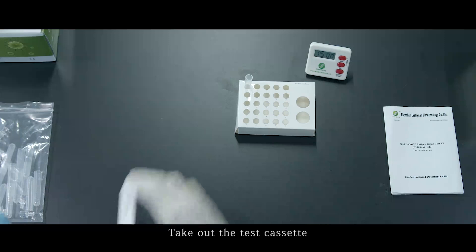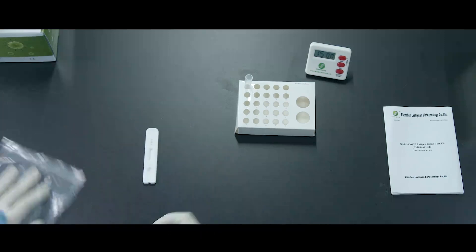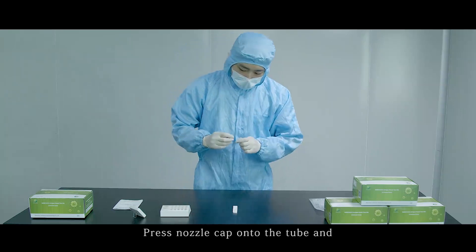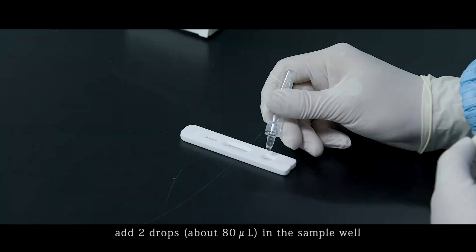Take out the test cassette. Press nozzle cap onto the tube and add 2 drops about 80 microliters in a sample well.